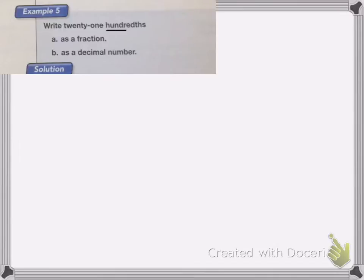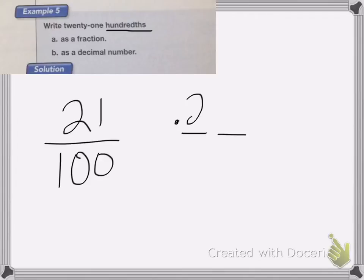We know it's in the hundredths place value, so that means we must have 21 hundredths. Now as a decimal number, it's going to be in the hundredths place value, which is my second place value here. So we're going to write 0.21 and that's in the hundredths place. 21 hundredths.